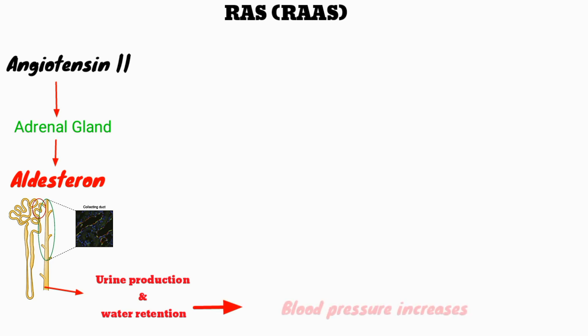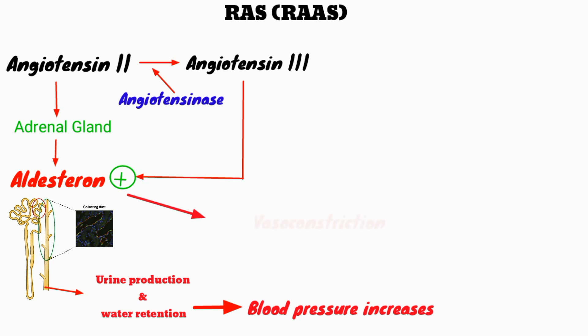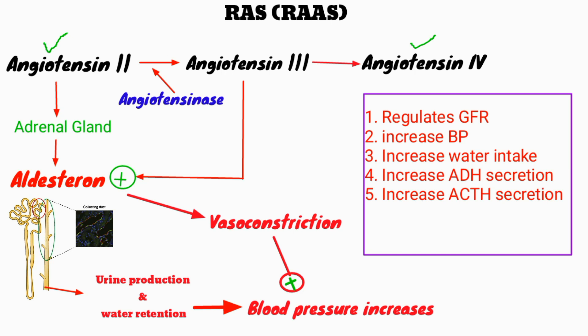As a result, our blood pressure goes up. On the other hand, angiotensin 2 is converted into angiotensin 3 by an enzyme called angiotensinase. Angiotensin 3 has the ability to increase aldosterone secretion and also causes vasoconstriction, increasing blood pressure. Angiotensin 3 is then converted into angiotensin 4. Both angiotensin 2 and angiotensin 4 can regulate glomerular filtration rate, increase blood pressure, increase water intake, and also increase ADH and ACTH hormone secretion.